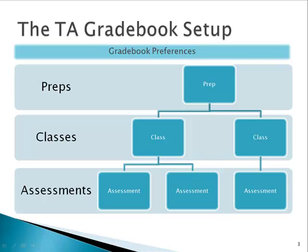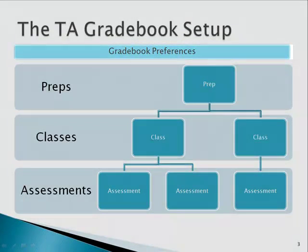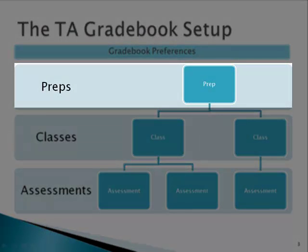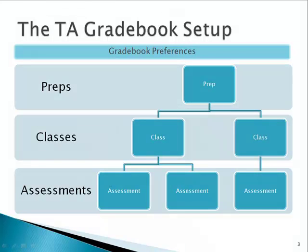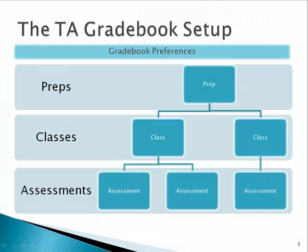This diagram highlights the relationship between the different elements we will be discussing within Teacher Assistant and the structure of the application, especially as it relates to setup. Starting at the top you see a blue bar, Gradebook Preferences. This is where you start to set up an electronic gradebook. All of the settings established here are carried through all of your work in the gradebook and applied to your entire gradebook. The next item is Preps, which are the subjects that you teach, such as Grade 9 Phys Ed or Grade 10 English. Classes have a one-to-many relationship with preps, meaning you may teach multiple classes of a specific subject, all attached to one prep.